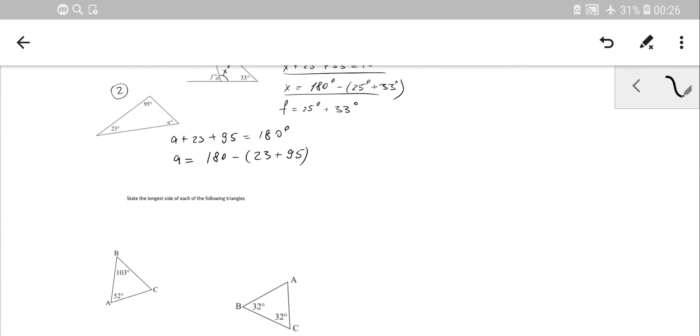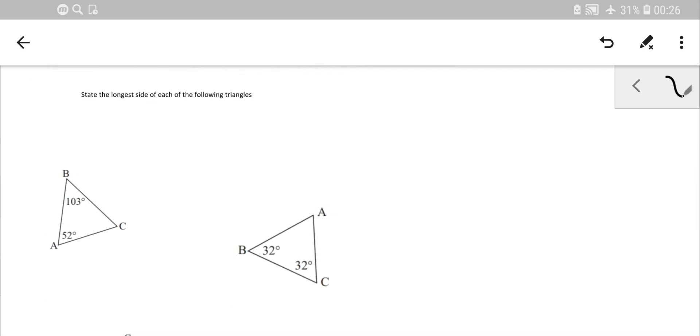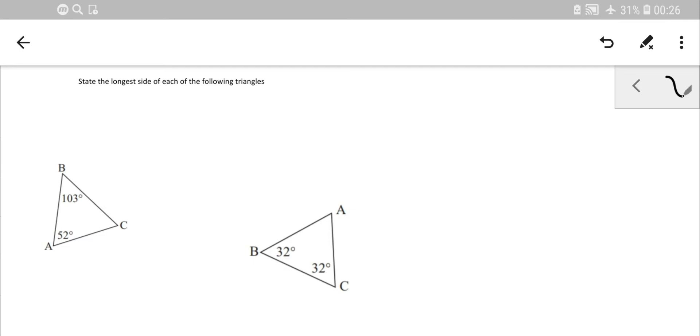Next: state the longest side of each of the following triangles. In order to know that, we know that the longest side will be opposite to the largest angle. So we're looking for the largest angle in the triangle.